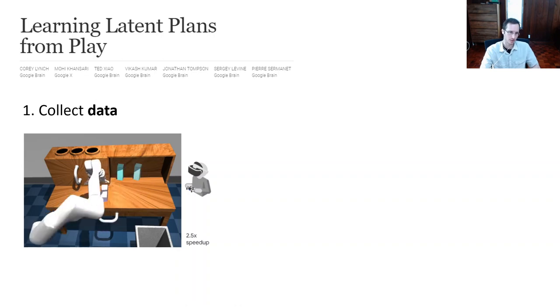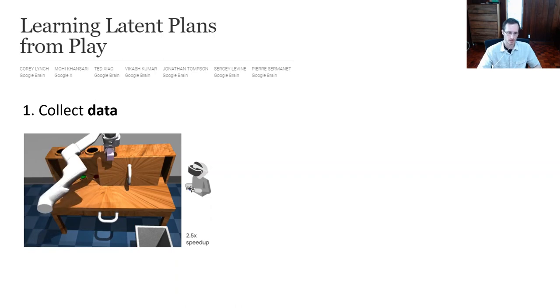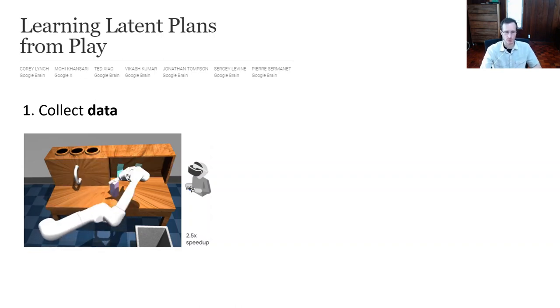So the concept there was to collect data with humans that were not actually told to do any task in particular, but they were just told to play around with objects in their environment. So in this data set, the people are using a VR controller to control the simulated robot, and they're kind of performing random stuff. So they're not moving the arm randomly, but they're performing random tasks.